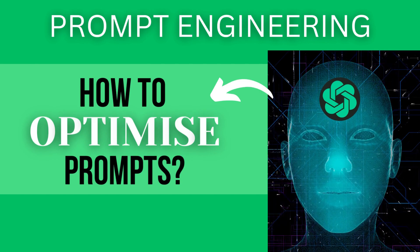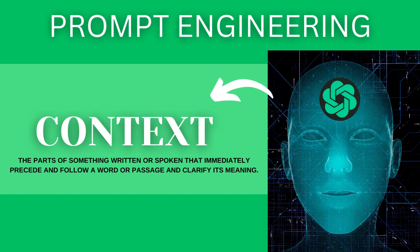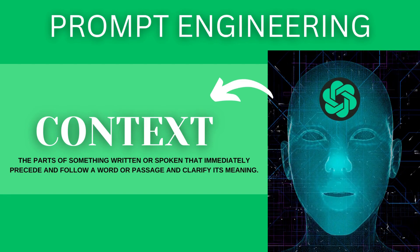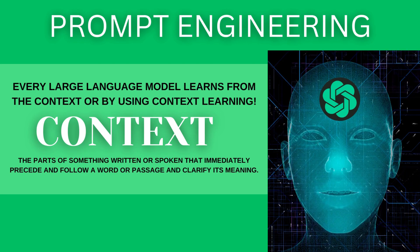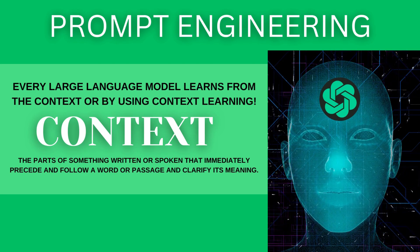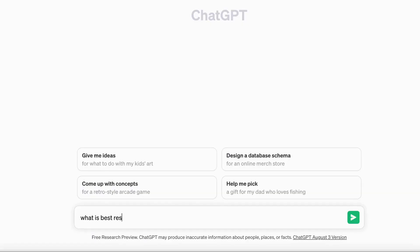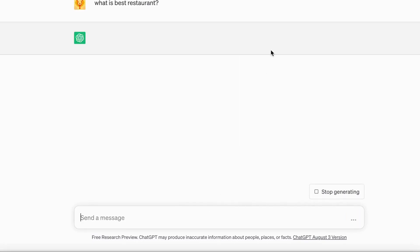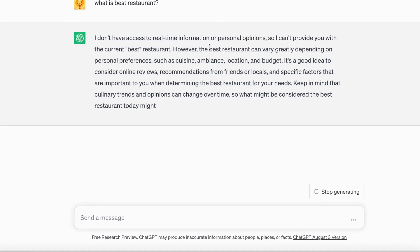The first thing I will talk about is context. Context in the prompt is very important because every large language model learns or searches for your prompt by using the context. For example, if you ask ChatGPT 'what is the best restaurant?', ChatGPT will have to search through its entire database that it is trained on, across all restaurant data.